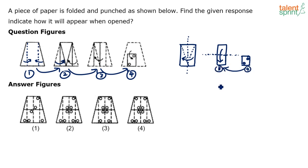When going from 4 to 3, this half rectangle becomes a full rectangle when unfolded. In a water image, the left remains left, right remains right, but top becomes bottom and bottom becomes top. So what is at the top comes at the bottom, and what is at the bottom goes to the top - but left side remains left and right side remains right.